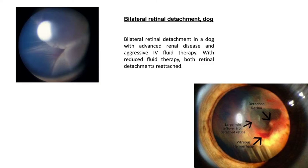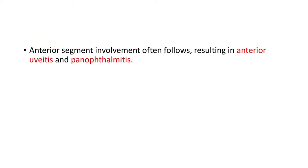This is chorio-retinitis in a hunting dog affected with testicular blastomycosis. Then bilateral retinal detachment in a dog with advanced renal disease and aggressive IV fluid therapy - with reduced fluid therapy, both retinal detachments are reattached. You can see the detached retina and the large hole left over from the detached retina, and a vitreous hemorrhage can also be seen. Anterior segment involvement often follows, resulting in anterior uveitis and panophthalmitis.